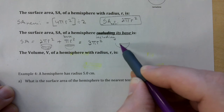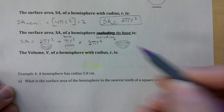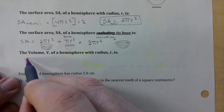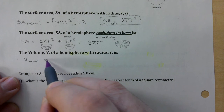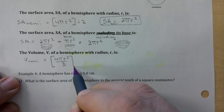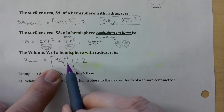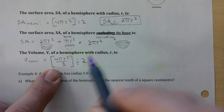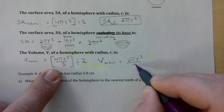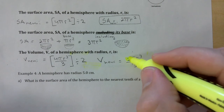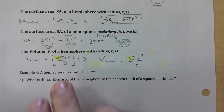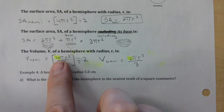The volume of a hemisphere is the volume of a full sphere divided in half. The full sphere volume is 4πr³/3, so divided in half gives you 2πr³/3. Notice the only thing that changed is the 2 compared to the 4. So the difference between the volume of a full sphere versus a hemisphere is just changing the 4 to a 2.